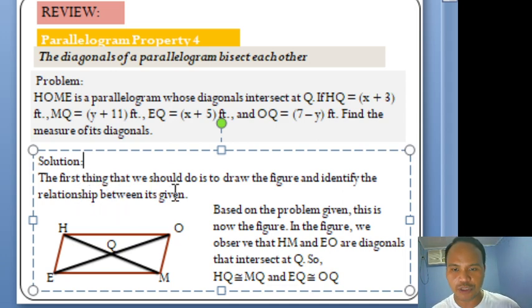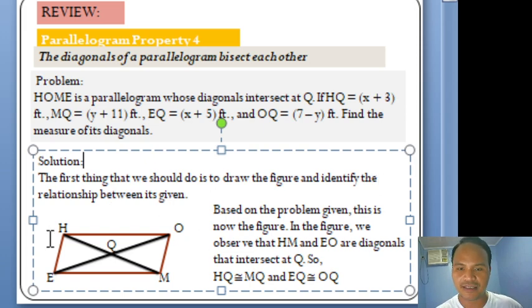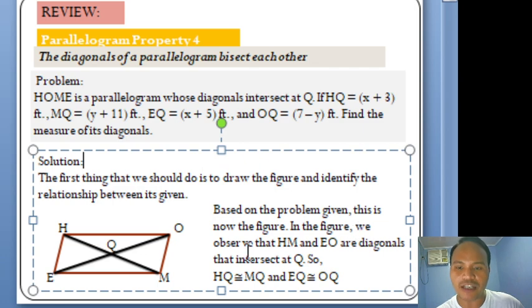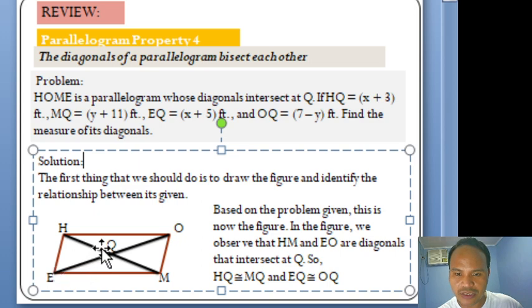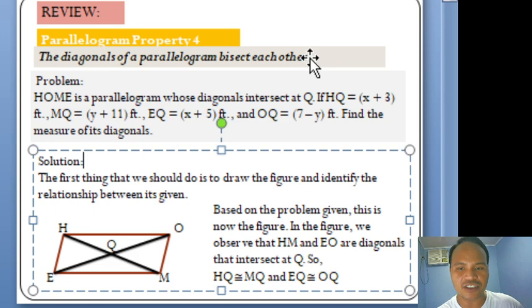The first thing we should do is draw the figure and identify the relationships between the given values. Based on the figure, we observe that HM and EO are diagonals that intersect at Q. So HQ is congruent to MQ, and EQ is congruent to OQ, based on Property No. 4, which states that the diagonals of a parallelogram bisect each other.